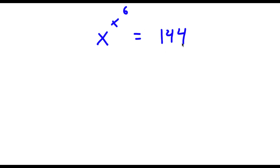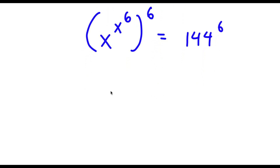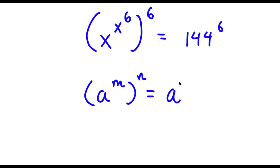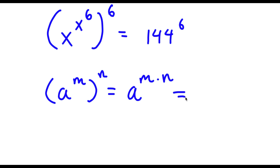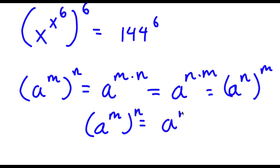Alright, so I have x to the power of x to the power of 6 is equal to 144. The first thing I'm going to do is take both sides to the power of 6, giving x to the power of x to the power of 6 to the power of 6 equals 144 to the power of 6. Using the rule that a to the power of m to the power of n equals a to the power of m times n, and noting that m and n are interchangeable, a to the power of m to the power of n equals a to the power of n to the power of m.